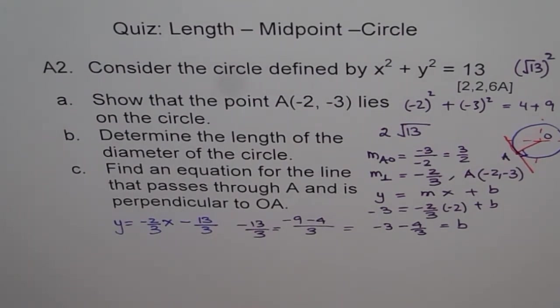So that is our equation of the line in slope-intercept form. You could write this in standard form also. Multiply everything by 3, bring x this side, and there you are.